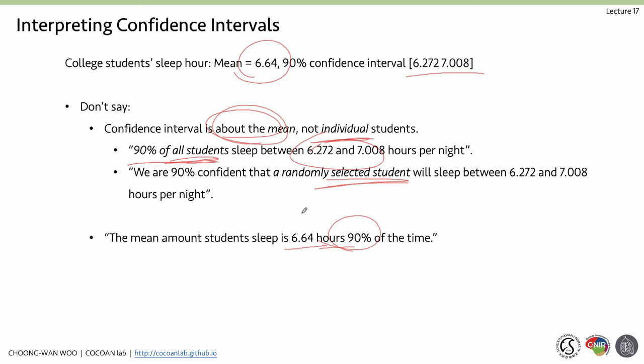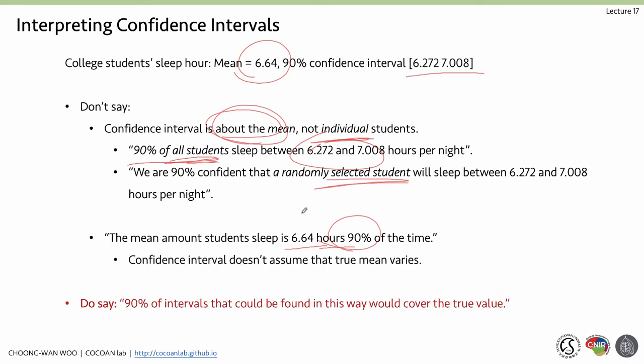What we also cannot say is 'the mean amount students sleep is 6.64 hours 90% of the time,' because that's about a point estimate, not an interval. What we can correctly say is: 90% of intervals constructed in this way would cover the true population mean value.